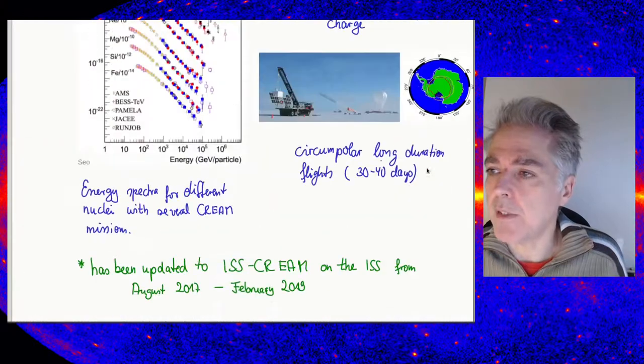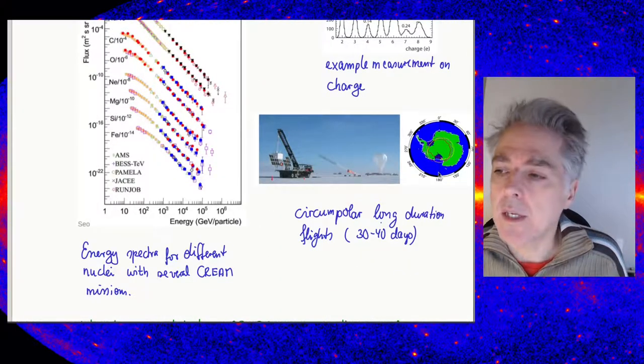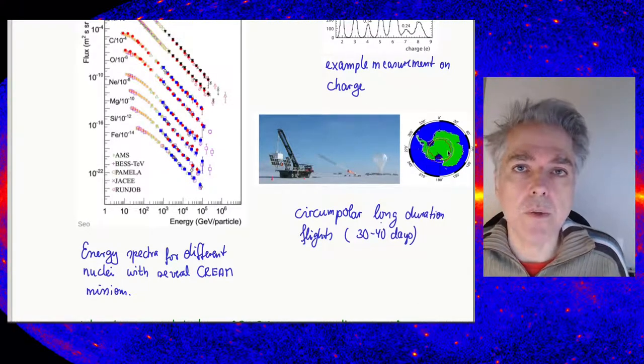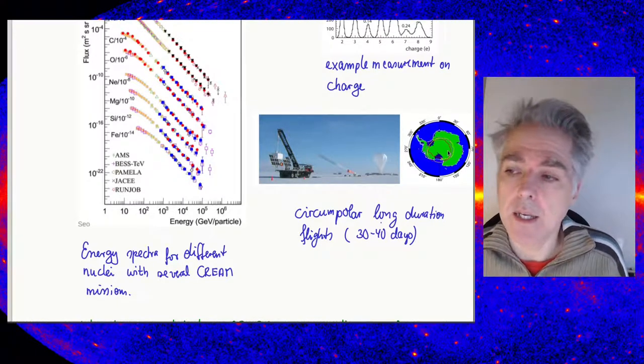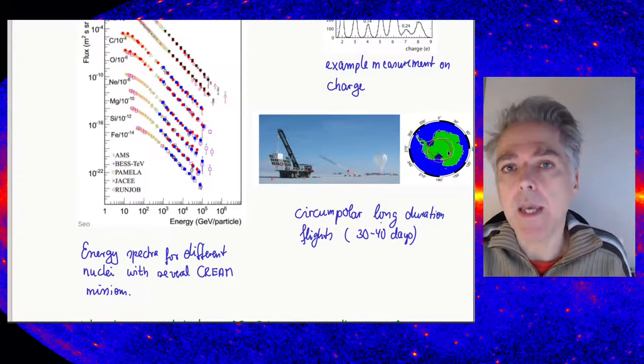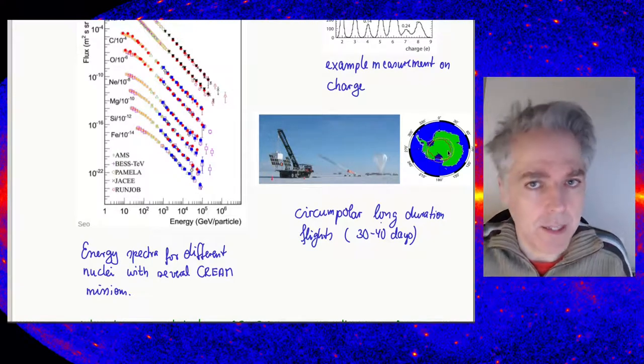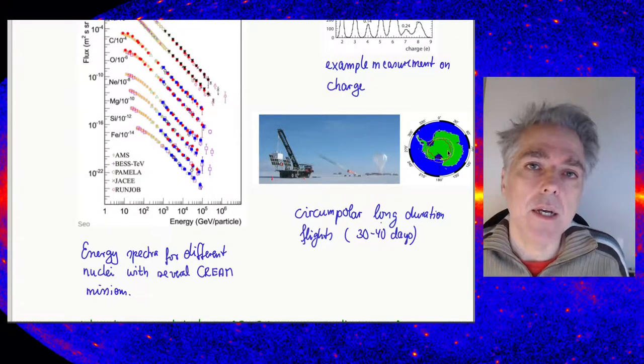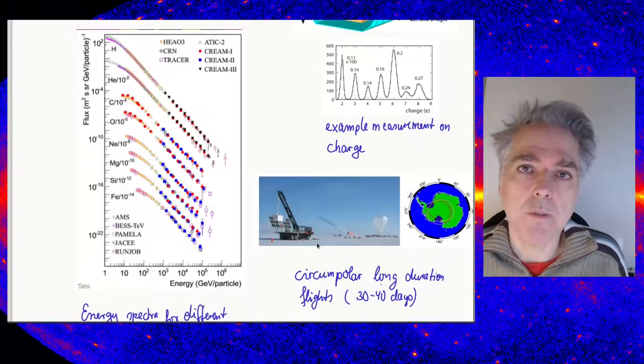Let me zoom in on this figure showing the Antarctic continent. You see the track marks are essentially what the balloon traces over roughly a month's time taking data. It passes around the South Pole multiple times, two to three times is common, until it passes near McMurdo Station. Then you cut the line, the lower part comes down with a parachute and can be recovered and used for another mission.